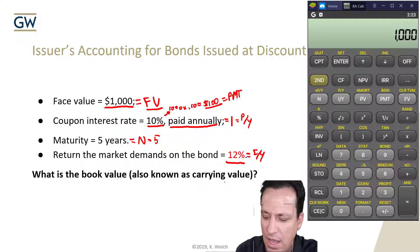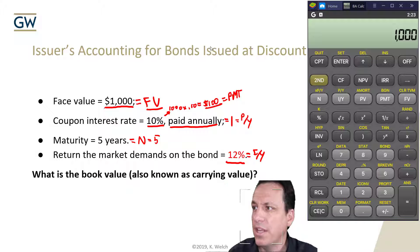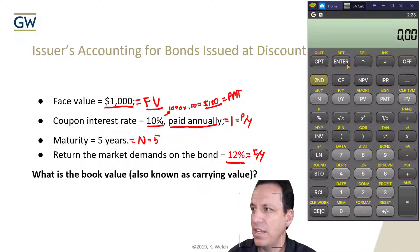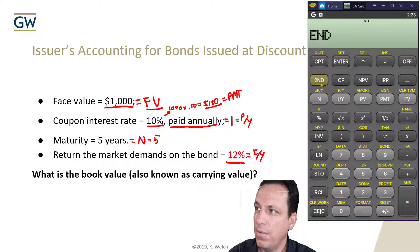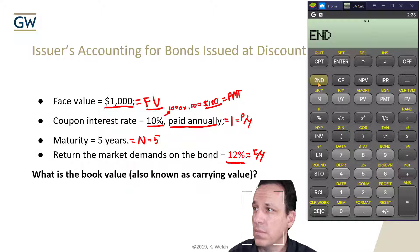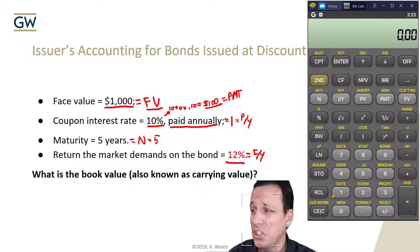Let's pull out our calculator. This is the emulator for the Texas Instruments BA2 Plus — it's a great calculator and the one I use for this class. The first thing we want to do is clear out all the values. Go Second, Clear Time Value. Then go Second, Clear Work to make sure the whole thing is clear. Then check that we're at end of period: go Second, BGN. If you need to change that, go Second, Set to toggle back and forth. Then go Second, Quit to get out of there. Now we're ready to plug and chug.